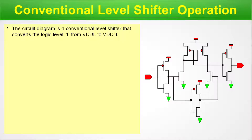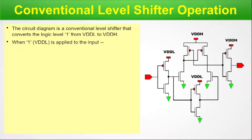You can see the grounds with the green triangles and the VDDs with the red rectangle supplies. VDDL and VDDH supplies are marked on the circuit. When logic 1, that is VDDL, is applied to the input, P5 goes off and N5 turns on, resulting in output 0.